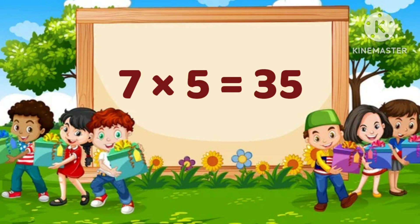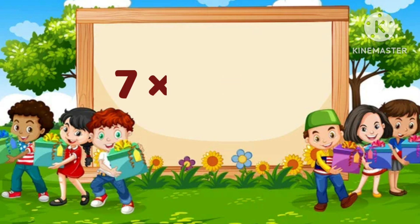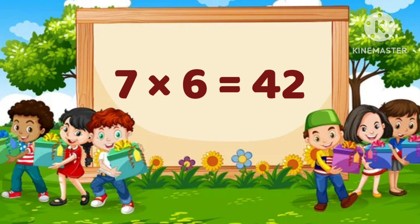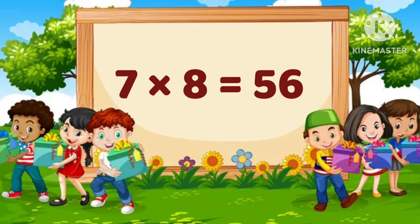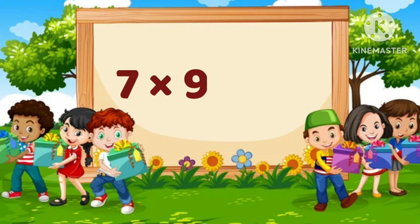7 times 5 is equal to 35. 7 times 6 is equal to 42. 7 times 7 is equal to 49. 7 times 8 is equal to 56. 7 times 9 is equal to 63.